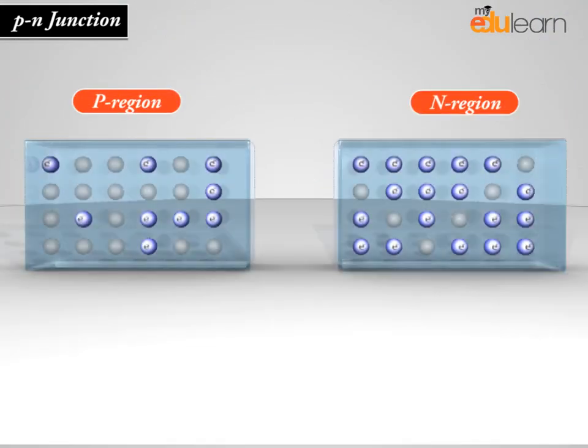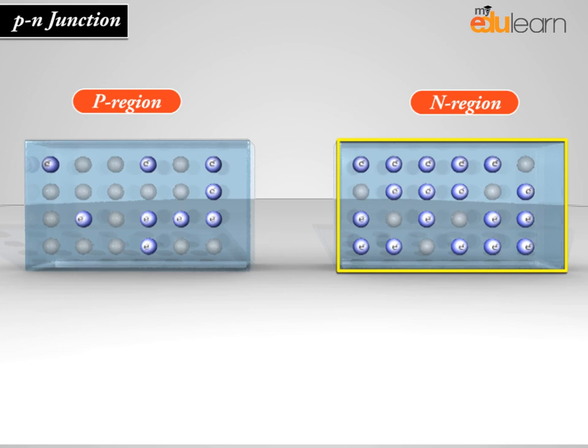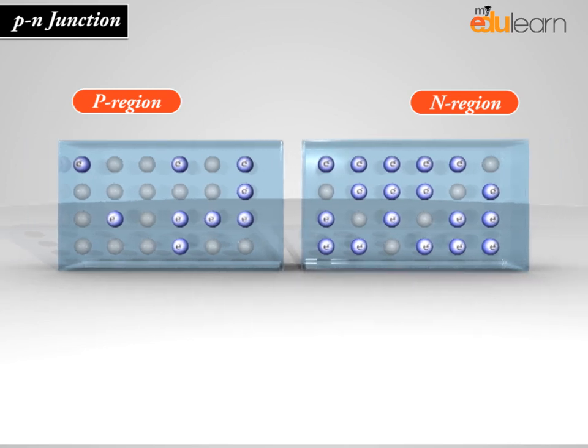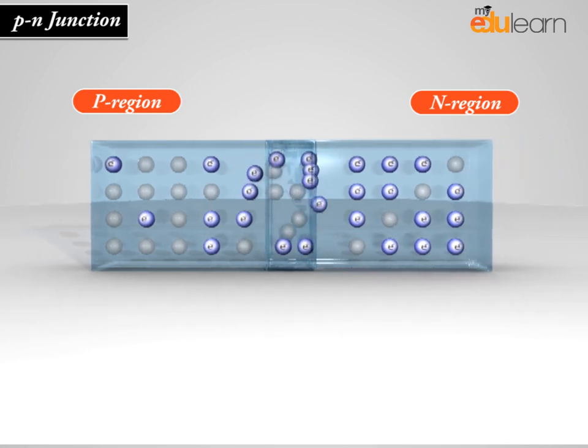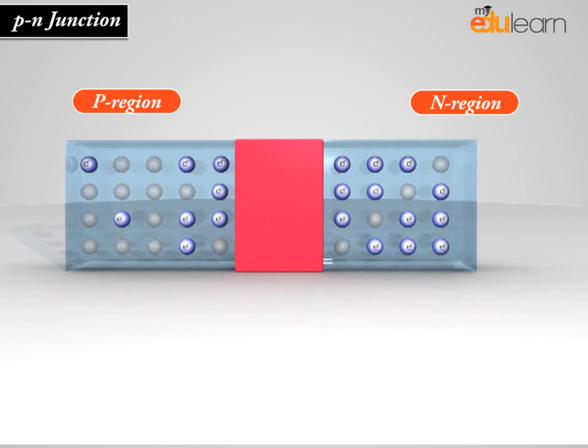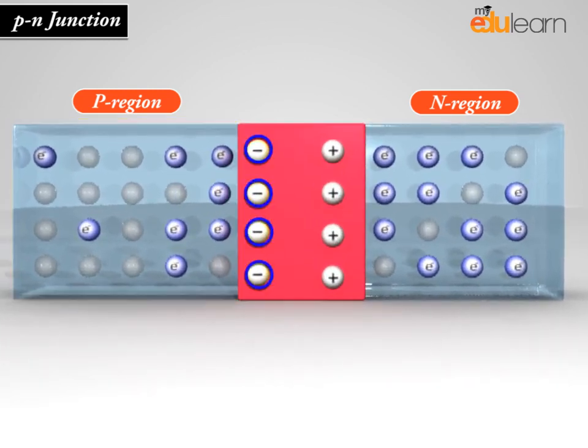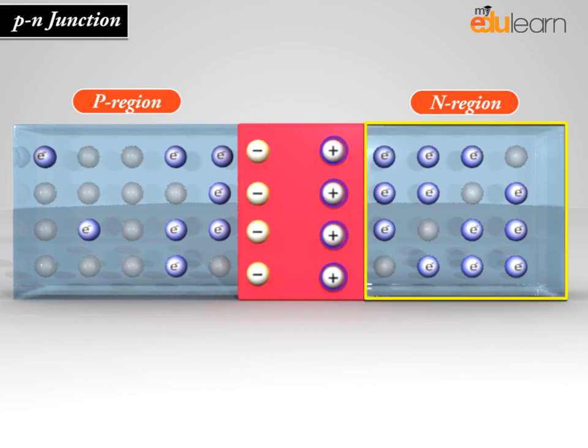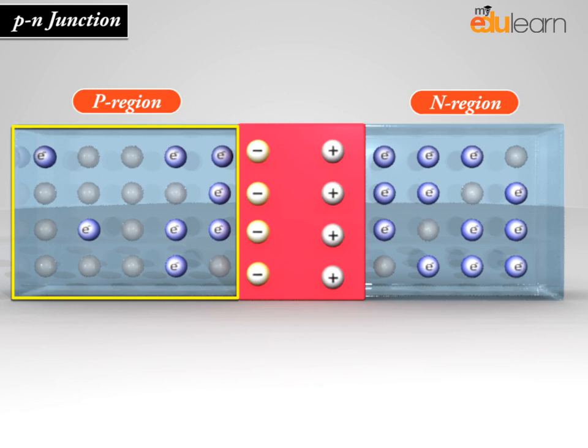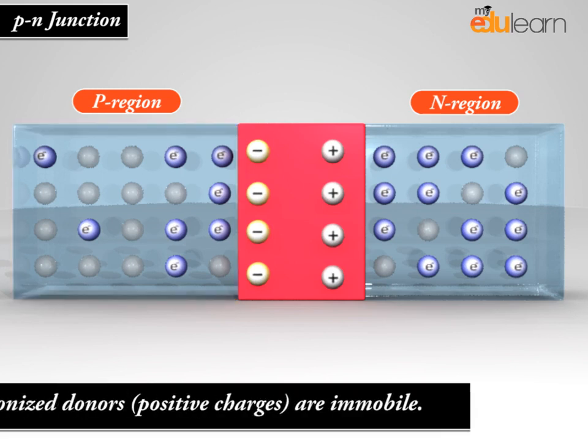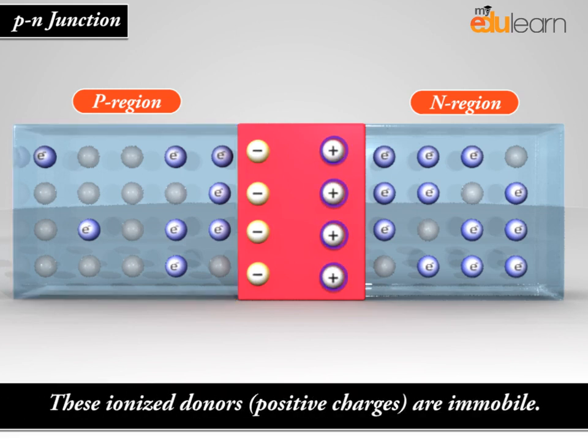Since the N-type region has a high electron concentration, electrons diffuse from the N-type side to the P-type side, leaving behind ionized donors on the N-side and combining with holes in P-type material. These ionized donors, positive charges, are immobile.